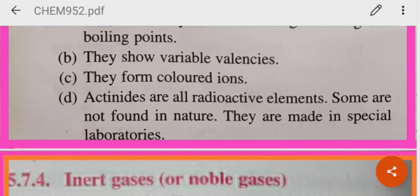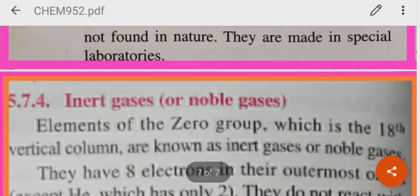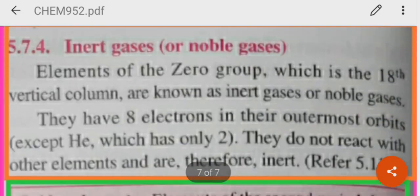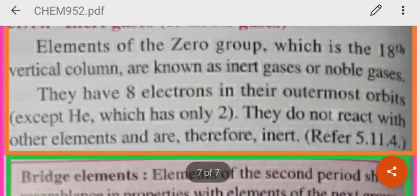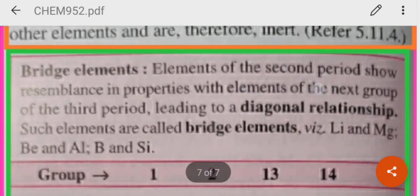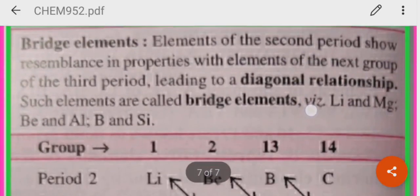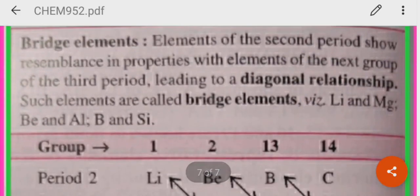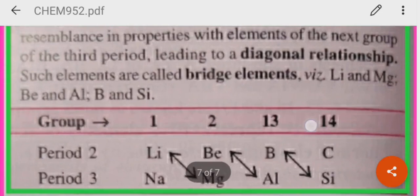What about the lanthanide and actinide series? They are known as the inner transition elements. They are heavy metals with high melting and boiling points. They show variable valencies. They form colored ions. Actinides are radioactive elements — they give out harmful radioactive rays. The noble gases or inert gases are stable because they have 8 electrons in the outermost shell.